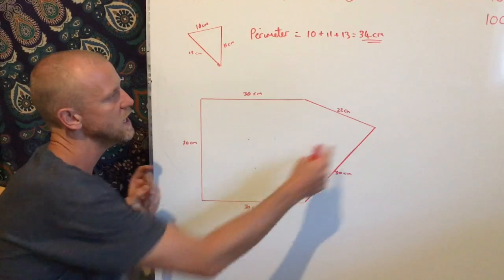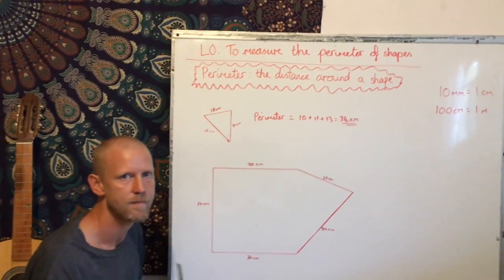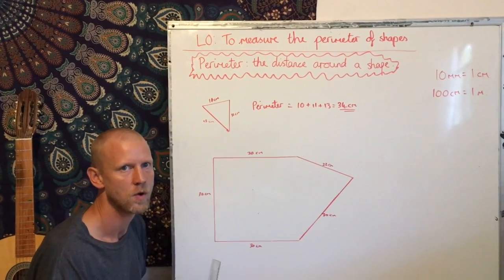When you've done that, you need to add up the sides to find out the perimeter of your theme park. Good luck.